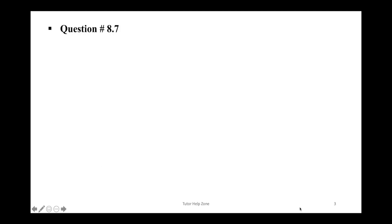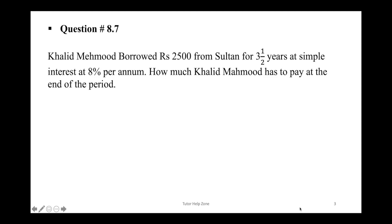Next question 8.7. Khalid Mahmood borrowed Rs. 2500 from Sultan for 3½ years at a simple interest rate of 8% per annum. How much does Khalid Mahmood have to pay at the end of the period? The principal is Rs. 2500, borrowed for 3.5 years. After this period, Khalid Mahmood will return the amount with simple interest added to the principal.